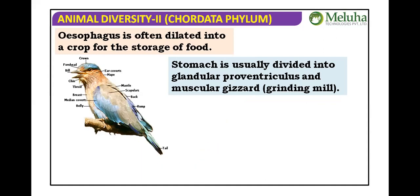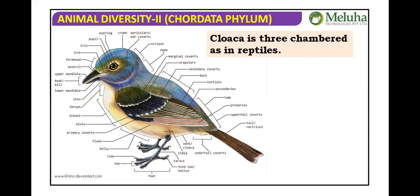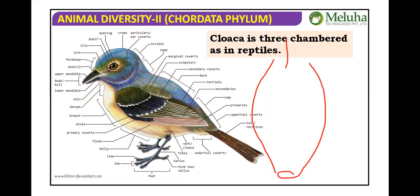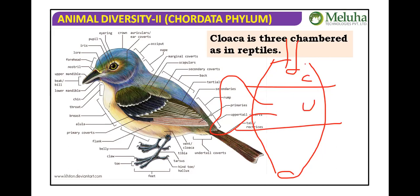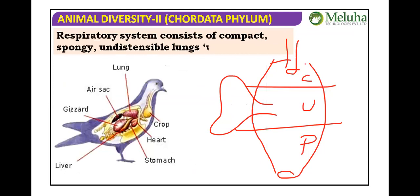Regarding the cloaca: as in reptiles, anus and urinary bladder open into the cloaca. The cloaca comprises three portions — coprodeum, urodeum, and proctodeum — same as in reptiles.